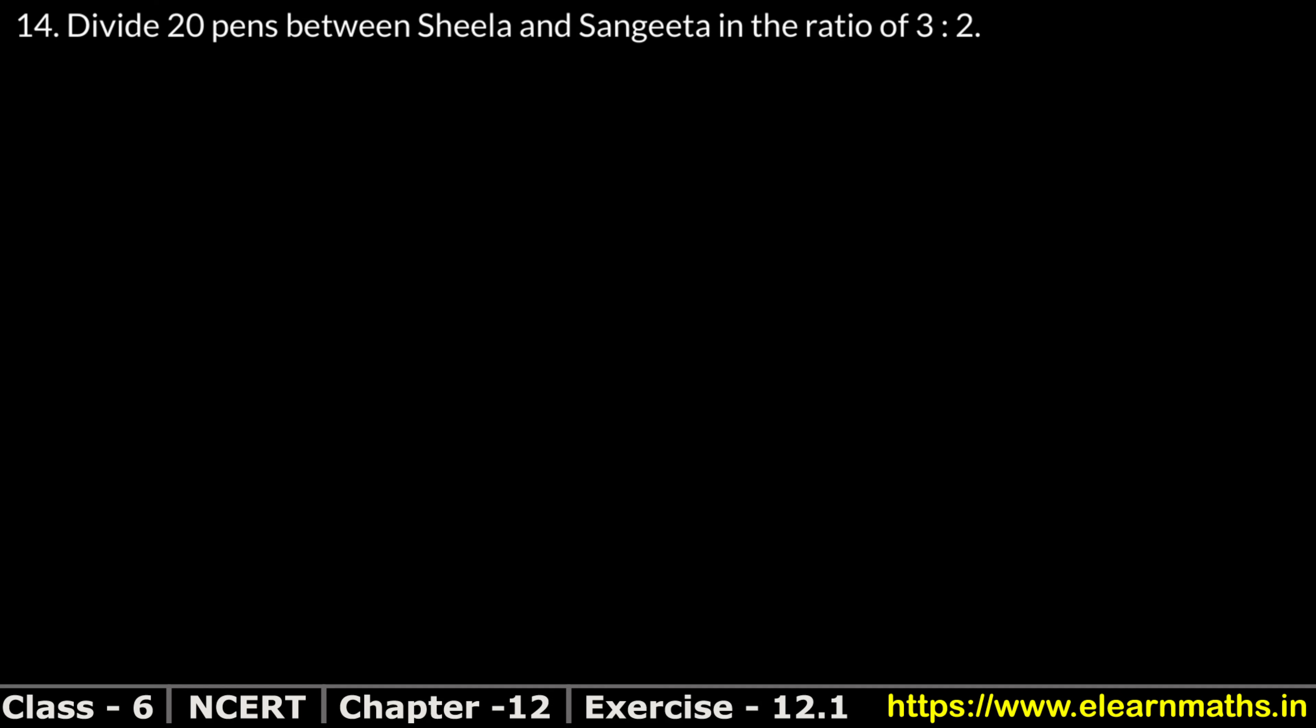Let's do question number 14 now. Divide 20 pens between Sheela and Sangeeta in the ratio of 3:2. How do we do it? When we have to divide between 2 persons, the first ratio is Sheela's 3, and Sangeeta's is 2.